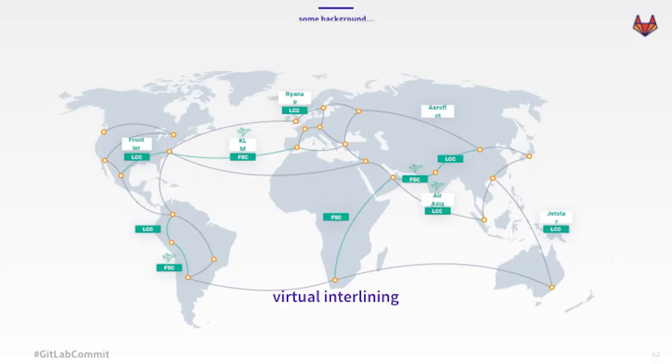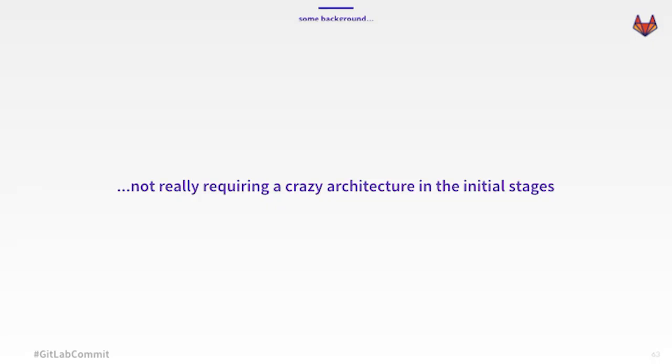Some small background about kiwi.com. We are an online travel agency, so we sell flight tickets. The main idea people usually get is that we're a meta search engine — not really. We actually own the tickets, which allows us to do pretty cool stuff. Our main feature is virtual interlining, so we connect flights from carriers that don't cooperate together, and we are the ones covering the transport. But at the end, this is all meant to justify that we didn't really need any special architecture — just a database, something to index those flights to allow us to search, and that's pretty much it.